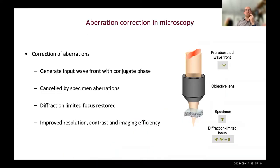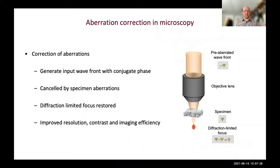We measured this directly in C. elegans, focusing at different points in the specimen and measuring the phase in the pupil of the objective lens. We saw that as we focus to different positions, the aberrations change - we get significant phase variations. This is why we need an adaptive method of compensating for aberrations in order to maintain the quality of operation of the microscope.